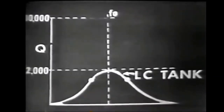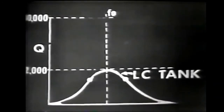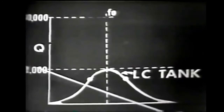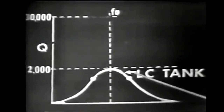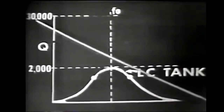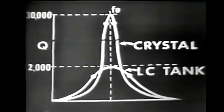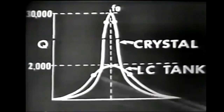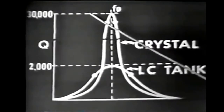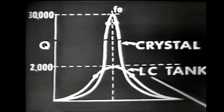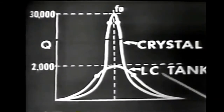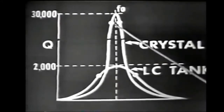The Q of the crystal circuit is many times greater than that of the LC circuit. The Q of an LC tank circuit is seldom greater than 2,000, whereas the Q of the crystal is sometimes as great as 30,000. Because of the high Q, the crystal has much better frequency stability.